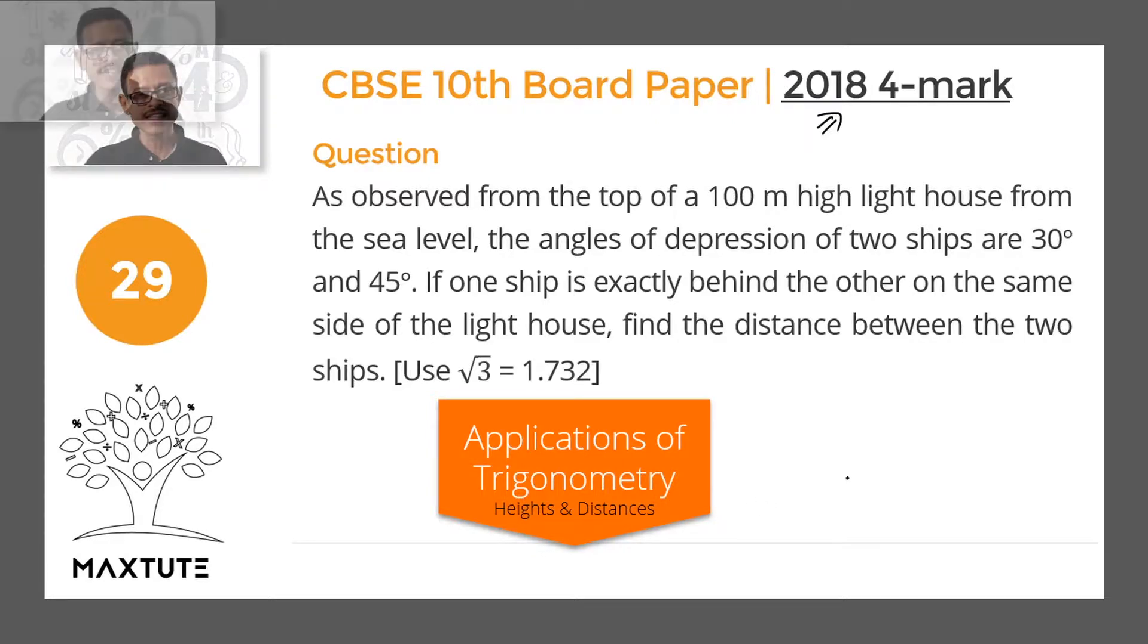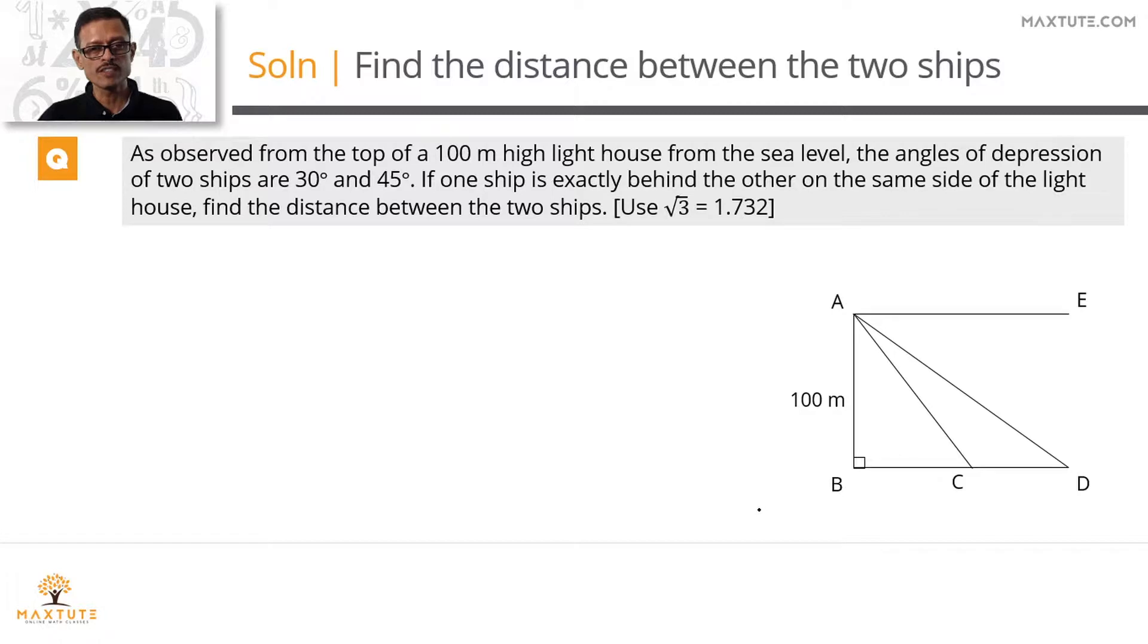Let's get started by setting up the schematic. The schematic is going to be a pair of right triangles. Let AB be the lighthouse whose height is 100 meters. C and D are the two ships which are spotted from the top of the lighthouse. What we need to find out is the distance between these two ships, which is the length of CD.